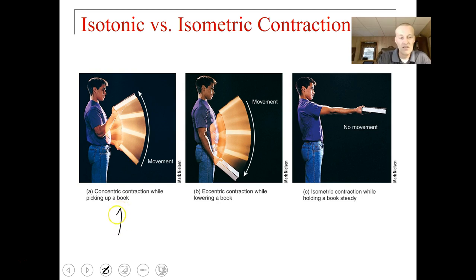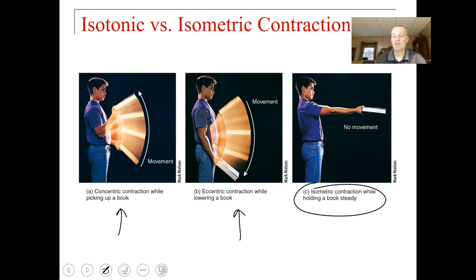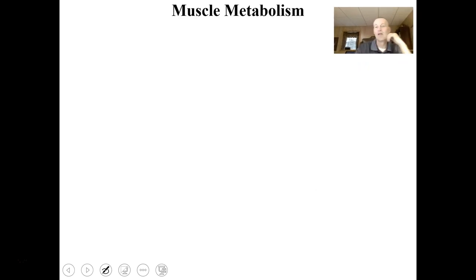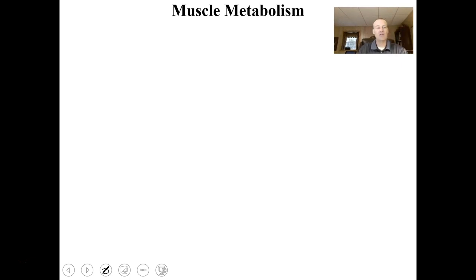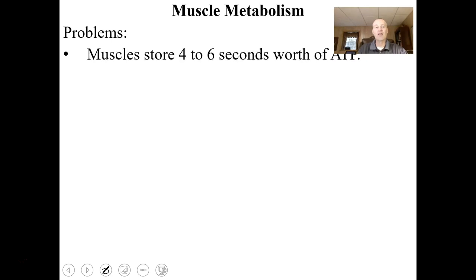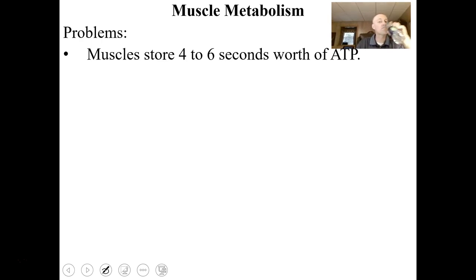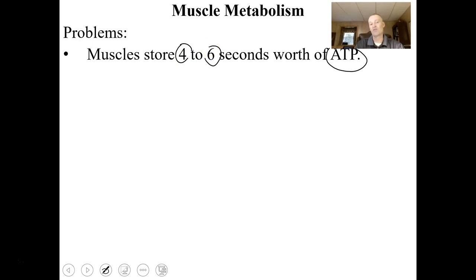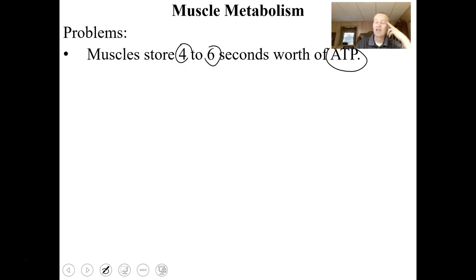Concentric contractions involve lifting a book so the muscle is changing length. Eccentric is where the muscle changes length while maintaining tension. If you're just holding a book outright, that's an isometric contraction. Muscles have to have energy — they have to metabolize food substances to get their energy. Muscle cells store only about four to six seconds worth of ATP, and ATP is the only energy muscle cells use for contraction, so there must be ways of generating more.